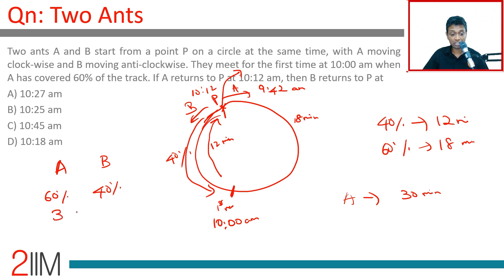Their speeds are in the ratio 3:2. The distances are in the ratio 3:2. They travel the same amount of time, so speeds are in the ratio 3:2, or time taken will be in the ratio 2:3. B will take more time than A.